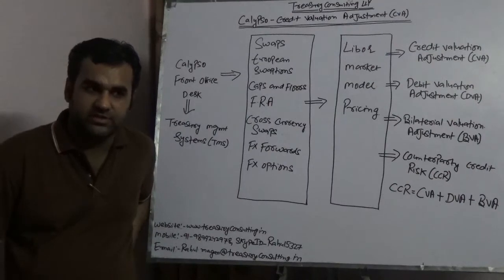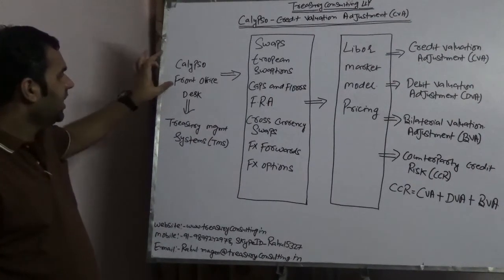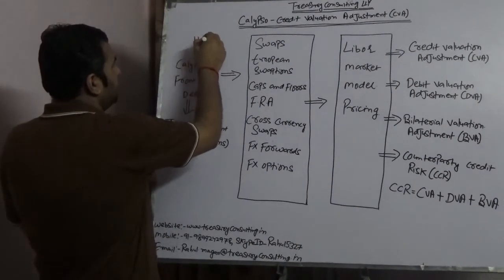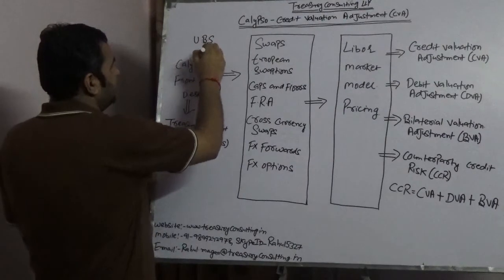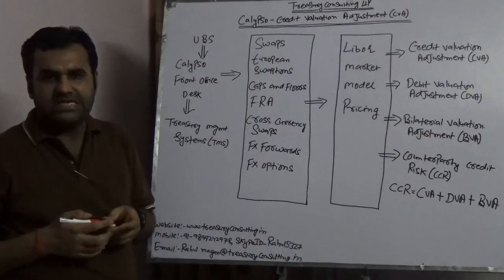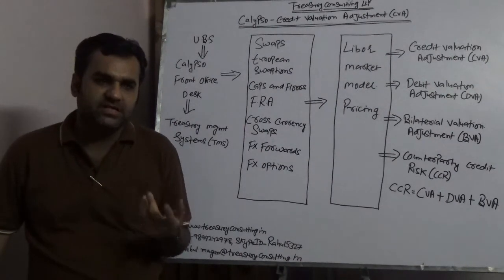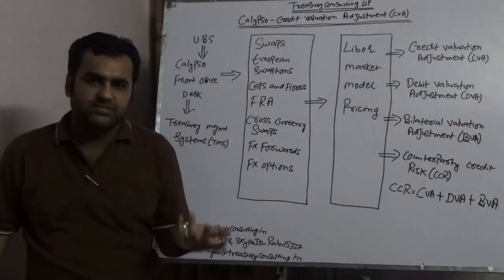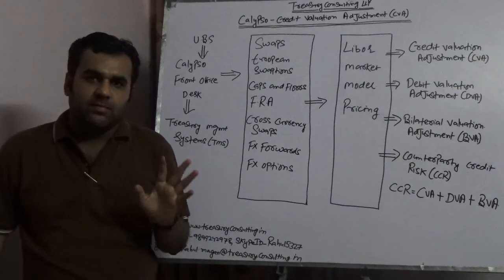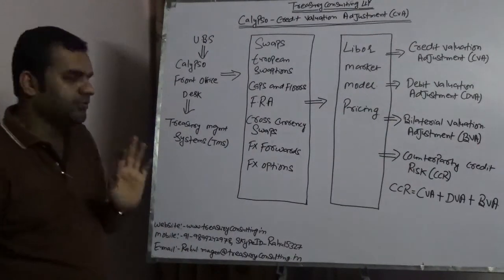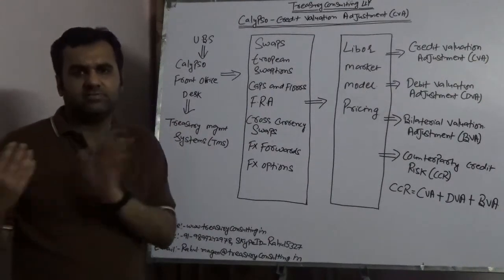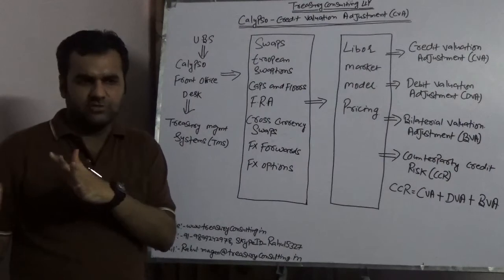Let's take an example of my favorite bank, UBS, United Bank of Switzerland. Although big banks like UBS, Goldman Sachs, Credit Suisse, Citi, RBS, JP Morgan Chase, HSBC, and Deutsche already have their proprietary software, for a minute assume that UBS is using Calypso.